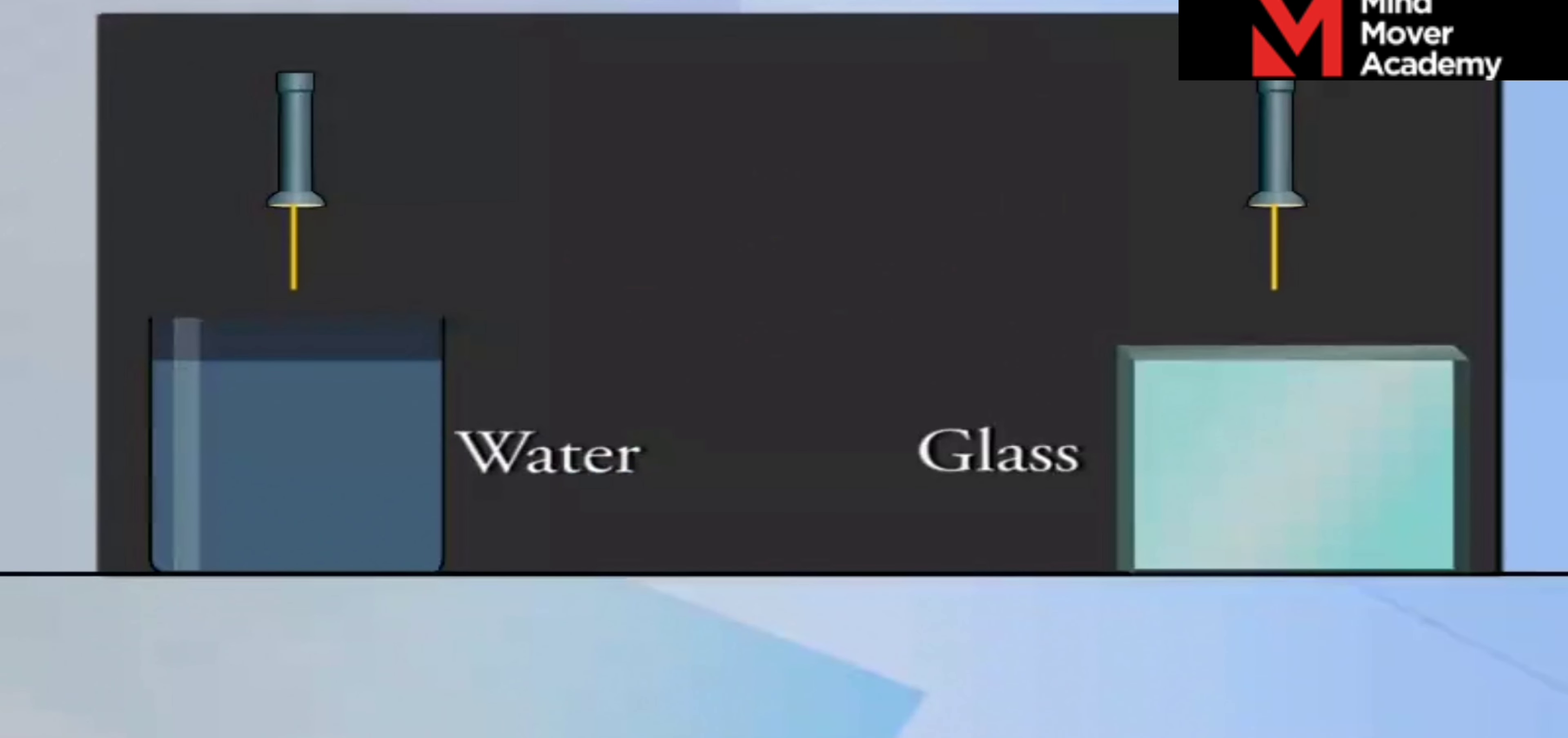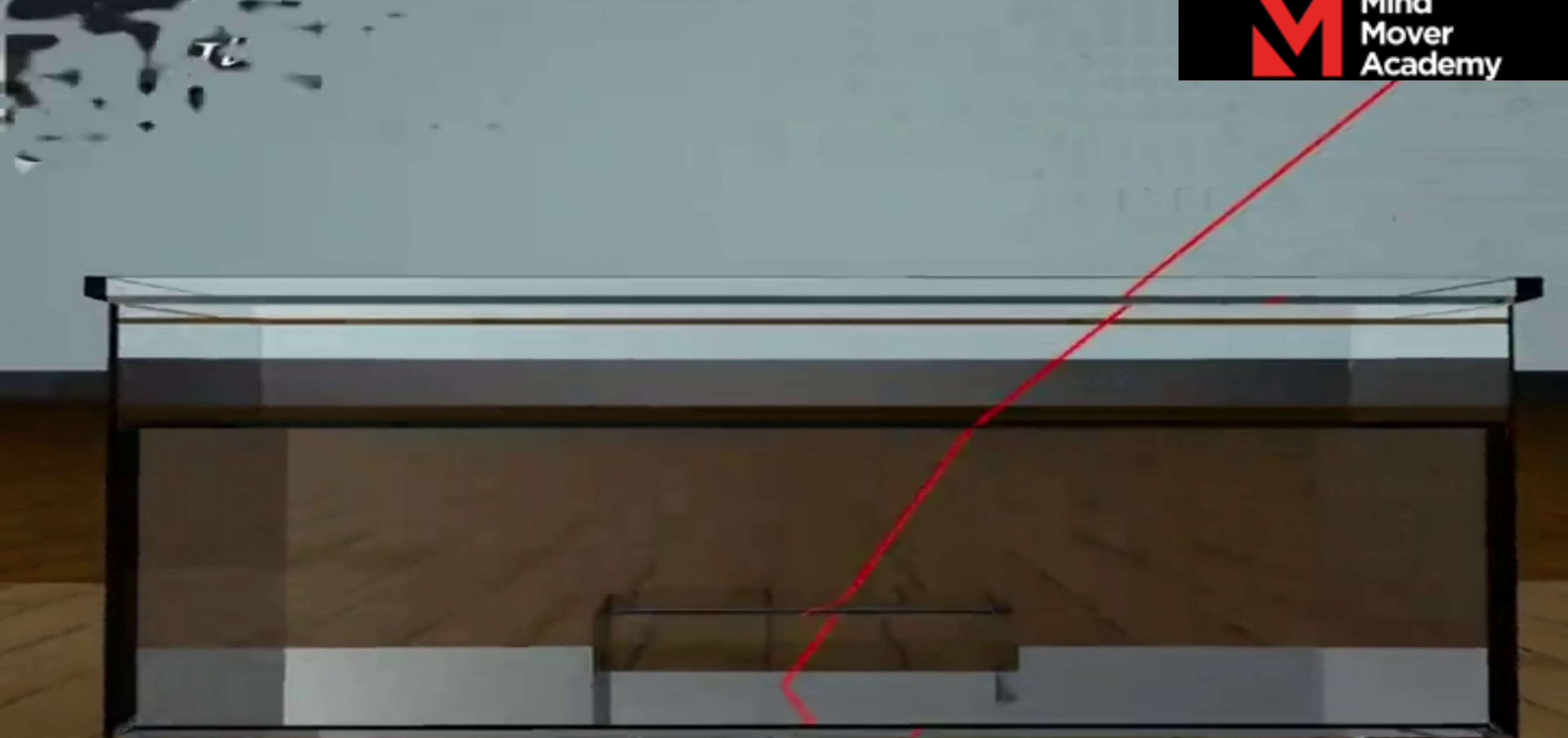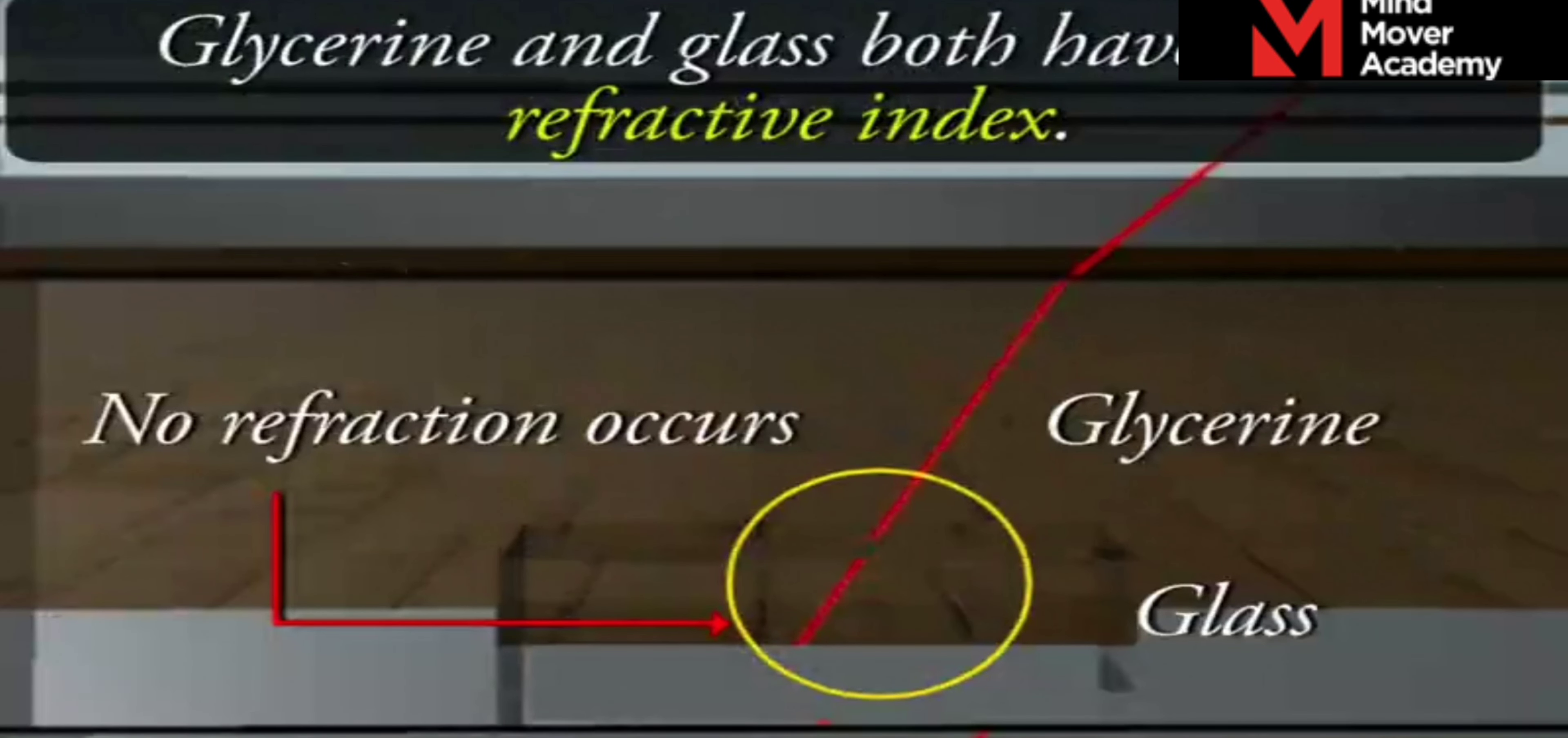When light is incident normally on a boundary of two media, no change in direction of light occurs. No refraction occurs at the boundary that separates two media of equal refractive index.